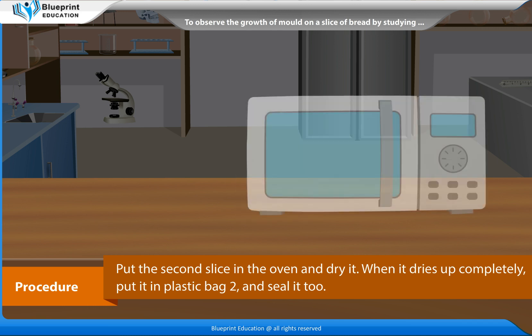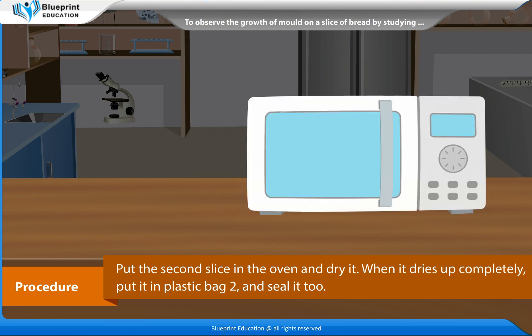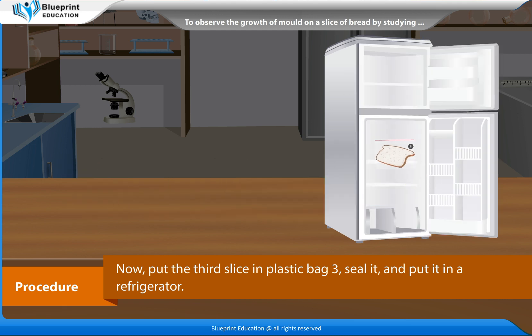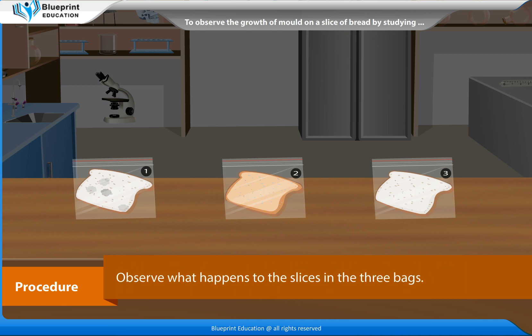Now put one slice of bread in plastic bag 1 and seal it. Put the second slice in the oven and dry it. When it dries up completely, put it in plastic bag 2 and seal it. Now put the third slice in plastic bag 3, seal it and put it in a refrigerator. Observe what happens to the slices in the three bags.